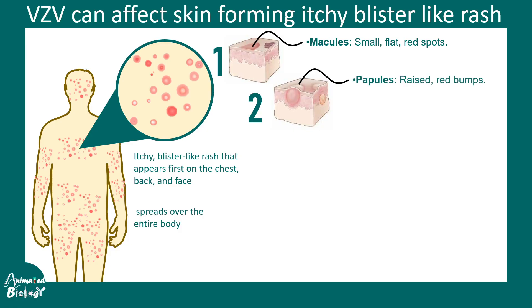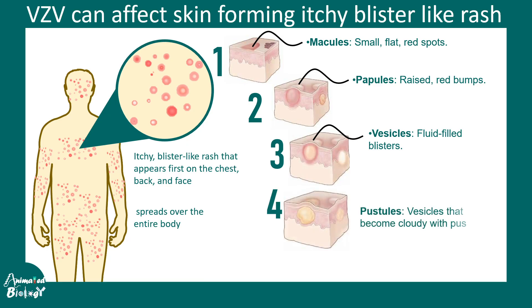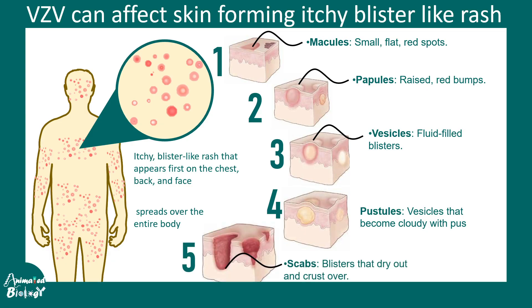Initially there are macules, which are small flat red spots; then papules, which are raised bumps; then vesicles, which are fluid-filled blister-like lesions; then pustules, which are vesicle-like but have a cloudy appearance filled with pus; and finally scabs, which are dried-out blisters with a crust on top. Many of these stages can be observed simultaneously — that is a typical feature of chickenpox, in contrast to smallpox.